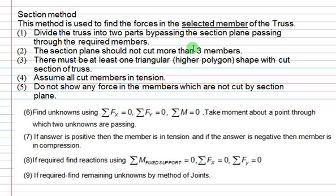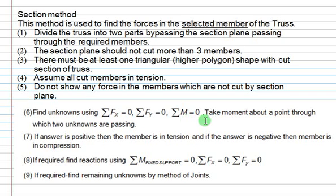Once you cut using the section plane, there must be one triangular or higher polygon portion remaining. This is because if we have a triangular or polygon section, then the force system will be non-concurrent. Otherwise the system will be concurrent, and in that case we have only two equations. But with a triangular or higher polygon portion, we have a non-concurrent force system giving three equations: sigma Fx = 0, sigma Fy = 0, and moment = 0.